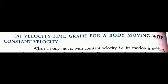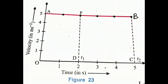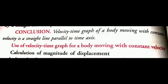The first case is the velocity-time graph for a body moving with constant velocity — that is, when a body moves with a constant velocity and its velocity does not change with time. Observe figure 23: if the velocity of a body at t = 0 is 5 meters per second, the velocity remains 5 meters per second for all times. The velocity-time graph for such motion is represented by a straight line AB parallel to the time axis. Conclusion: the velocity-time graph of a body moving with constant velocity is a straight line parallel to the time axis.